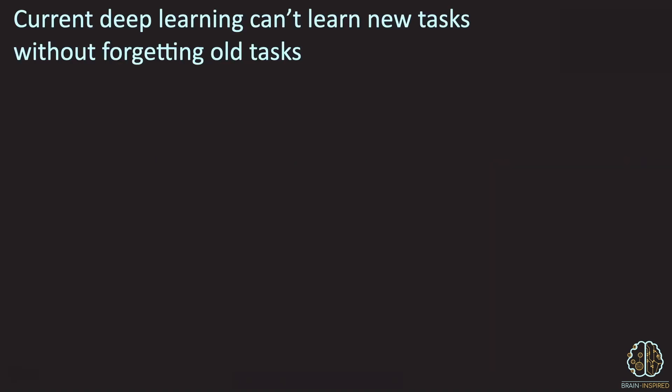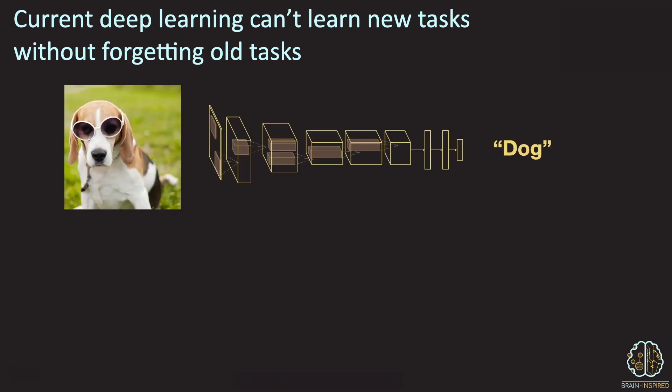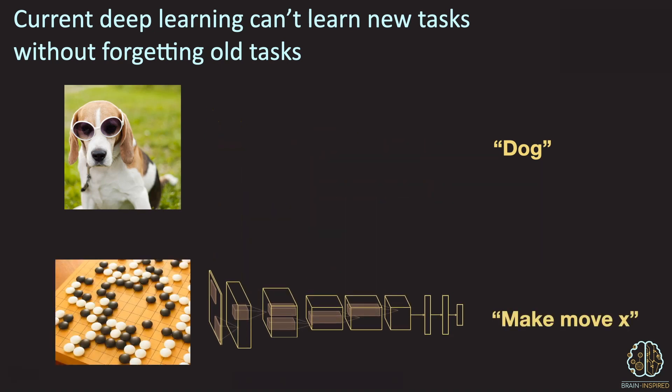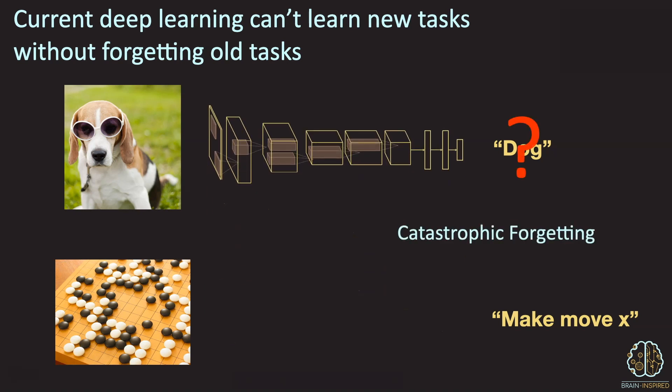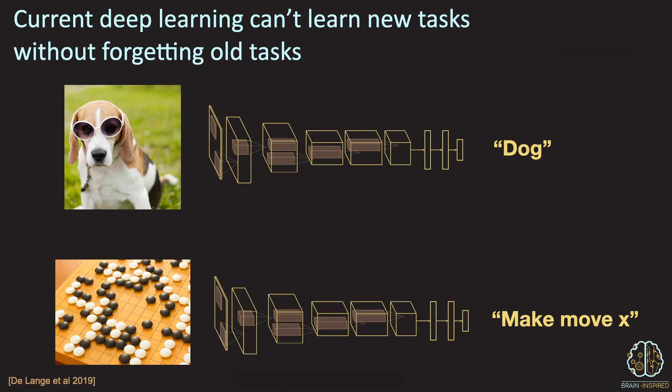One way to highlight this is to train a network on a variety of tasks and see what happens. So you can train a network to be an excellent dog detector, for instance. Then you can take that same network and teach it to be a world-class Go player. But then if you ask that network to detect dogs again, it's suddenly no good at it. This is called catastrophic forgetting. Training it on Go has made it forget how to detect dogs. There are multiple lines of research trying to make networks that are good at multiple things and stay good at multiple things. These go by names like transfer learning or continual or lifelong learning.